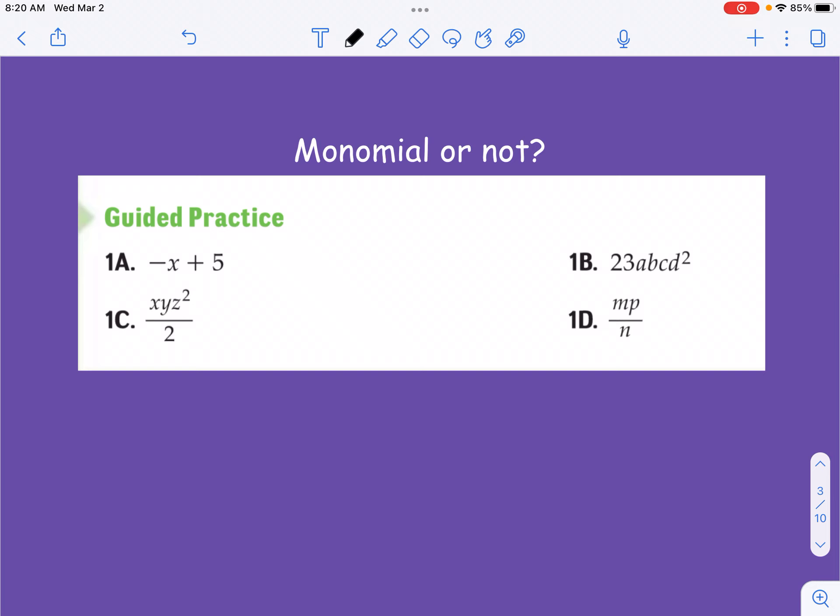So on this first one, okay, I'm going to put the highlighter on. We've got, you know, negatives are cool. The fact that we've got this, that's cool. This would be cool. But the problem with this is, is that we've got this thing going on. That's not cool. You cannot have any kind of operation other than multiplication happening in a monomial.